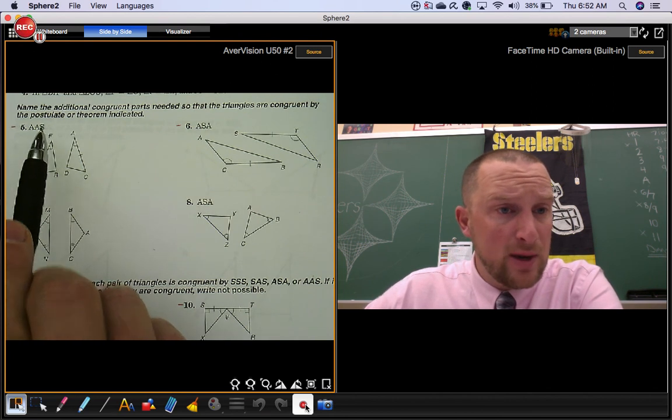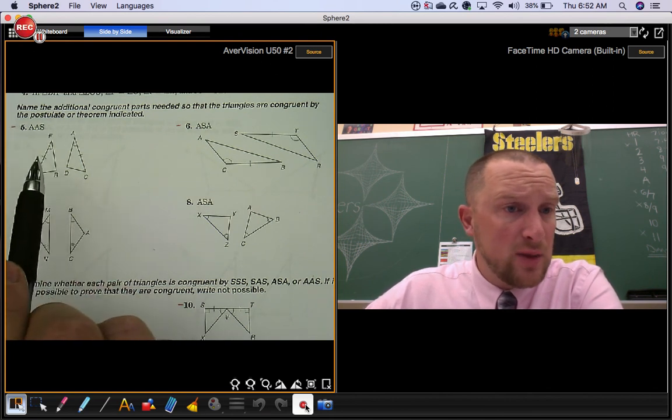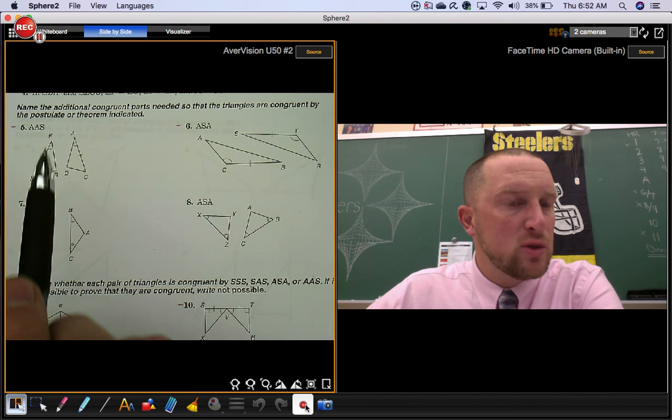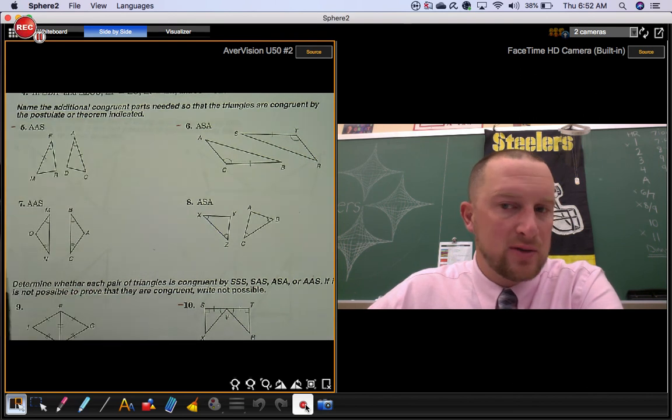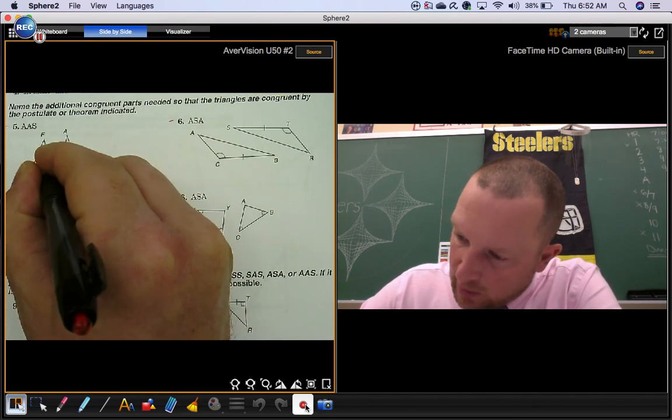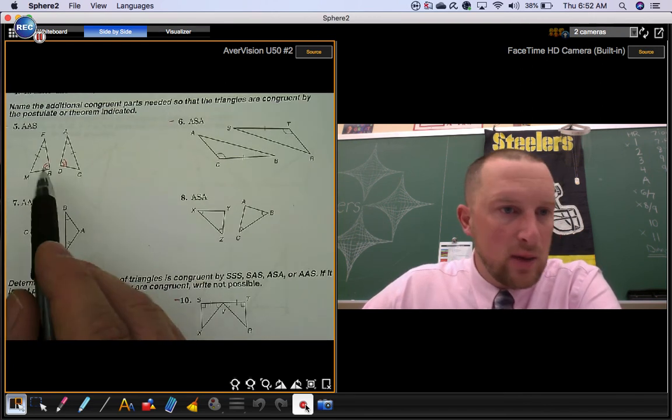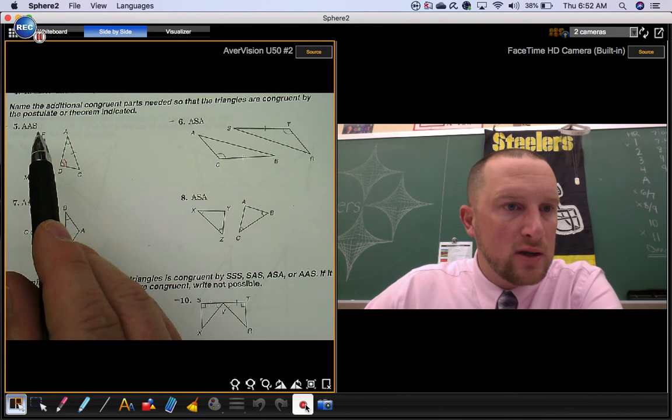So you want to use angle angle side here. So notice how we have congruent sides and congruent angles, but we don't have the second pair of congruent angles. Where would you put them for them to be congruent by angle angle side? Well, I need to put congruent angles in these spots. That way my congruent sides are non-included.